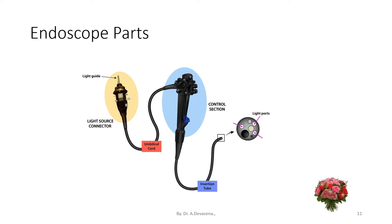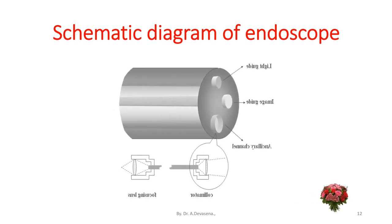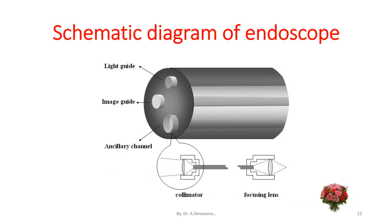A schematic diagram of the endoscope is shown here. The tip of the endoscope is focused and it comprises a light guide, image guide, and ancillary channel. There is also a colorimeter and focusing lens assembly inside the ancillary channel.